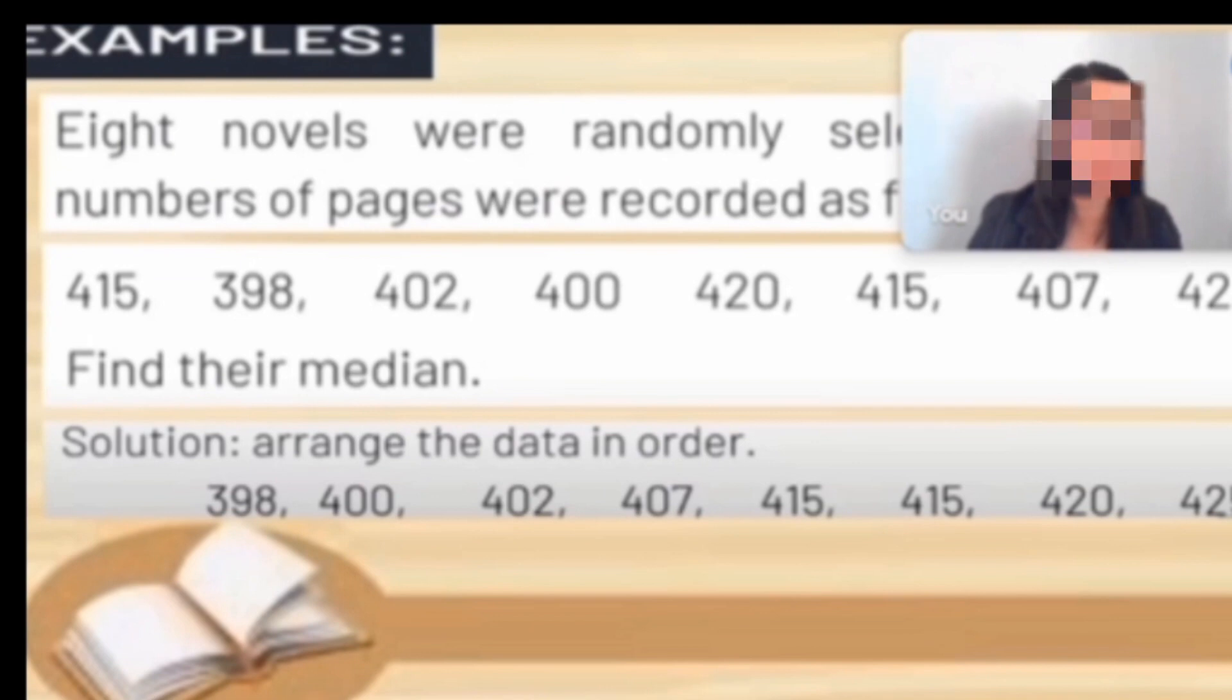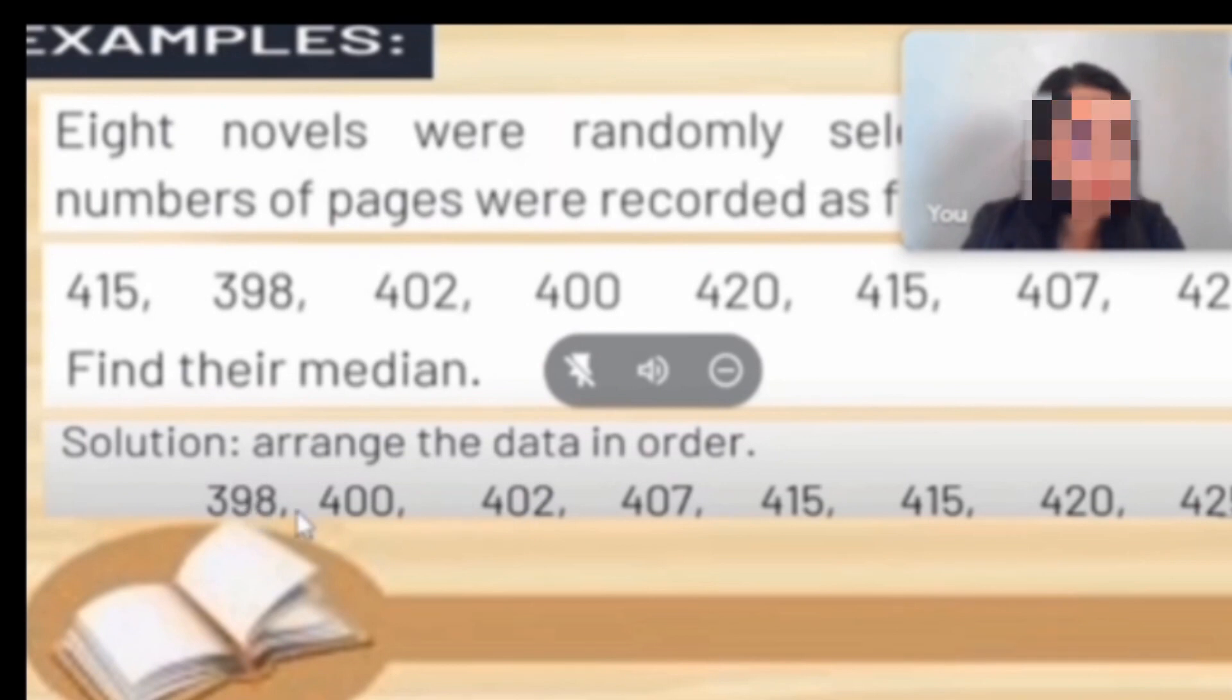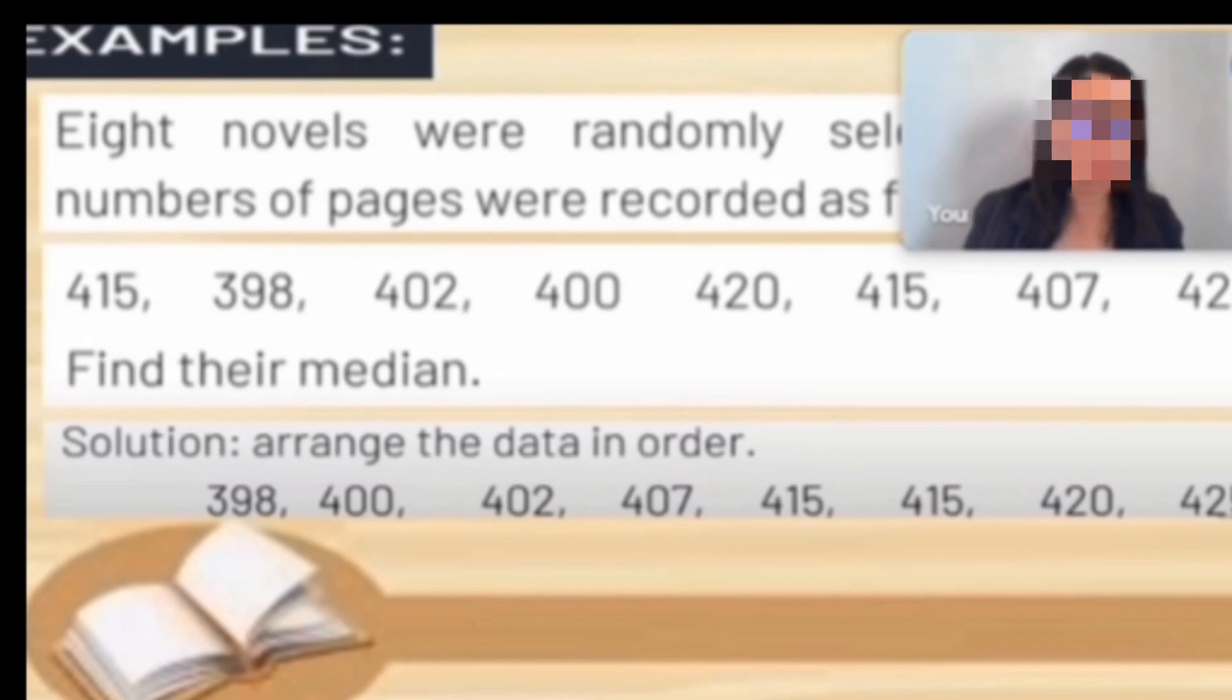But there is no 4.5 in our location. Therefore, the median is located in the 4th and 5th location, in between 407 and 415. Our 4th location is 1, 2, 3, 4 which is 407, and our 5th location is 415.